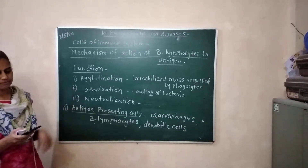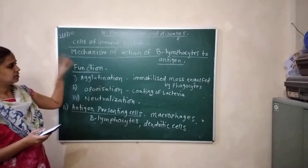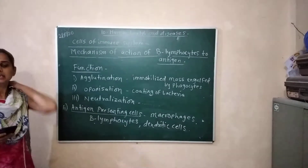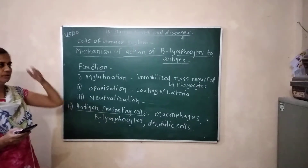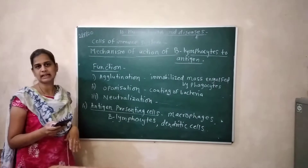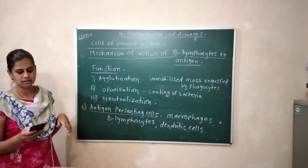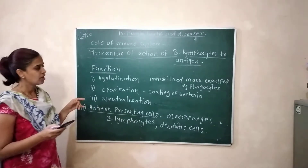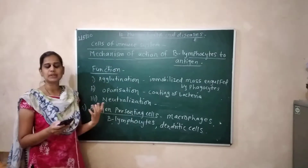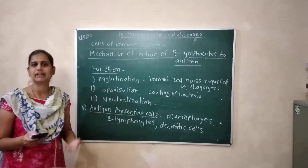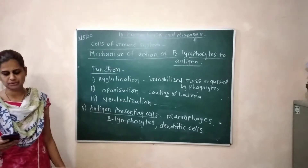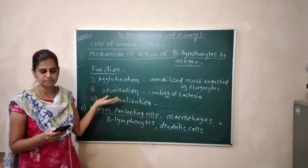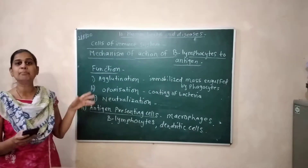B lymphocytes are sensitized directly by antigen as well as helper T cells. When B lymphocytes are activated, T lymphocytes multiply very fast, and after that they produce more B lymphocytes, a clone of plasma cells and memory B cells.